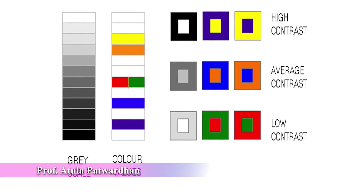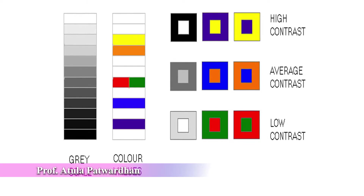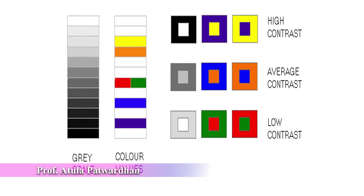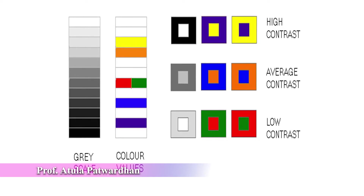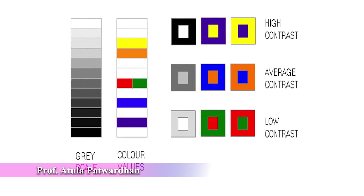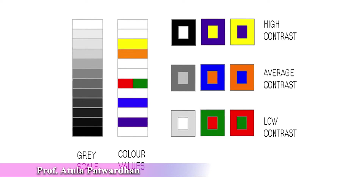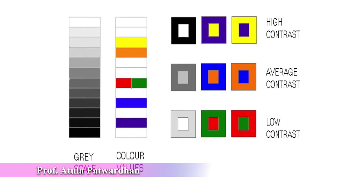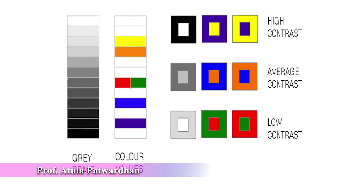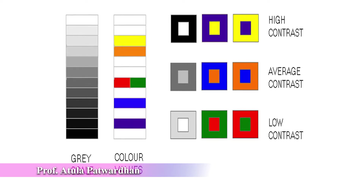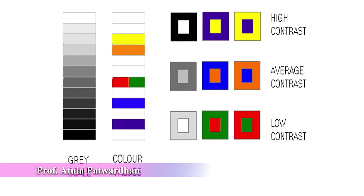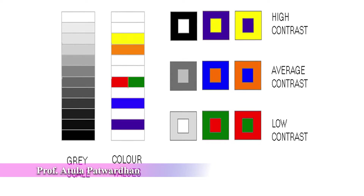This is the grayscale, showing color values and value-wise contrast. In color theory, we cannot consider white and black as color — it is the presence of light and absence of light. In this grayscale, you will see the intensity of light is slowly decreasing. The uppermost rectangle represents 100% presence of light and the lowermost represents 100% absence of light. Colors are positioned as per their value or darkness matching with the grayscale: yellow is at the third level, then orange, green and red on the same level, then blue, and violet at the bottom. High, average, and low contrast pairs of colors are shown here.